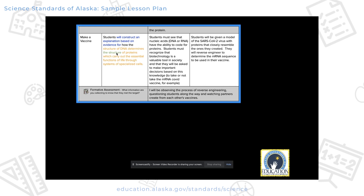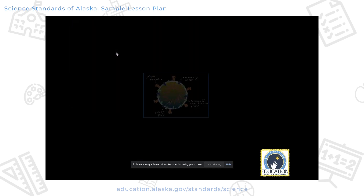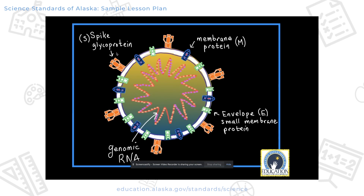Here's the last part of my activity — I wanted them to make a vaccine. My active statement is that students would construct an explanation based on evidence of how the structure of DNA determines the structure of proteins, which carry out the essential functions of life through systems of specialized cells. We covered the DNA piece, but with an mRNA vaccine, I wanted them to recognize that it's also the nucleic acid that could code for the protein.